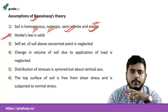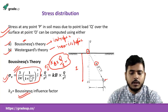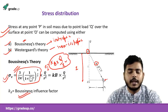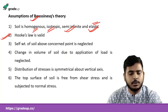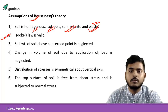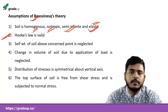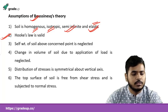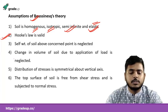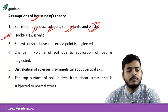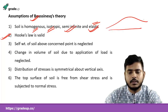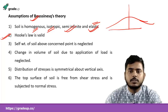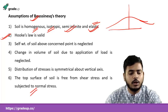The third assumption is that the self-weight of soil above the concerned point is neglected. The fourth assumption is that the change in volume of soil due to application of load is also neglected — the volumetric strain is ignored in Boussinesq theory. The fifth assumption is that the distribution of stresses is symmetrical about the vertical axis. The top surface of soil is free from shear stress and subjected only to normal stress.